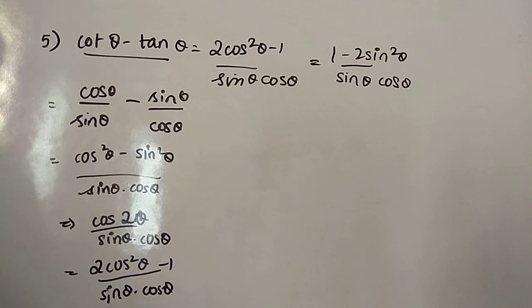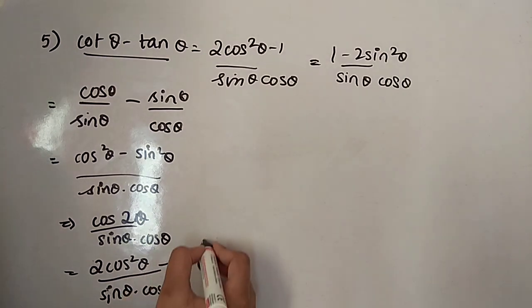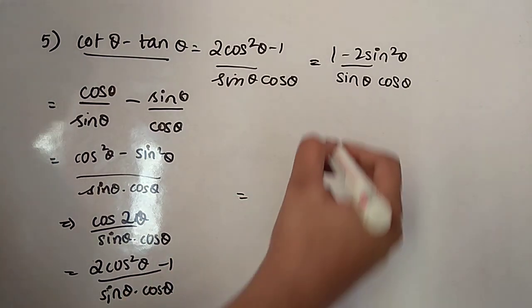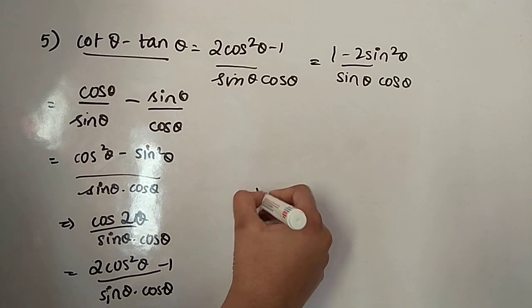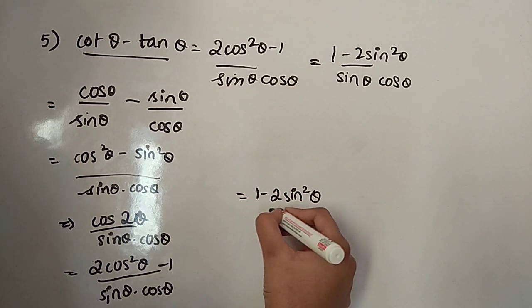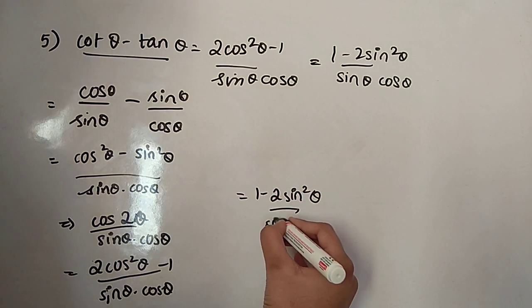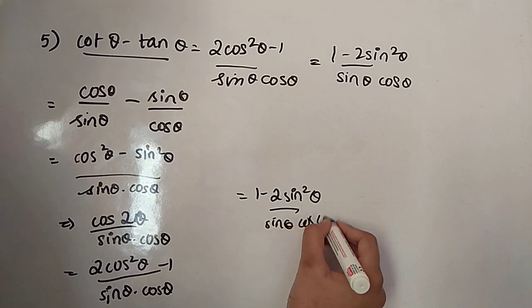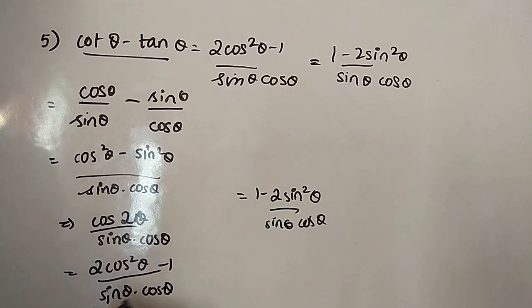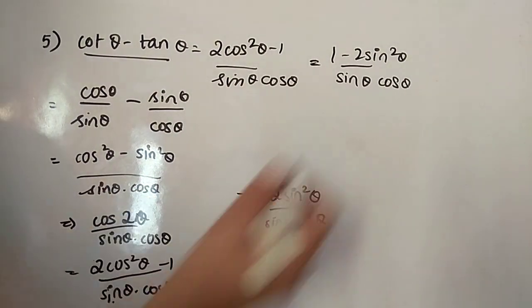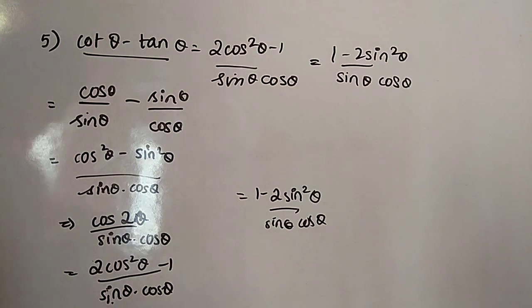We can also write cos 2 theta as 1 minus 2 sin squared theta, giving (1 minus 2 sin squared theta) divided by sin theta cos theta. Both expressions match the RHS, so the equation is proved.